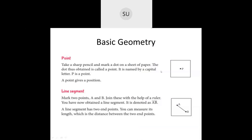Now let's see a few basics of geometry. First, what is a point? A point gives you a position. If you take a sharp pencil and mark a dot on a sheet of paper, that dot is called a point. It is named by a capital letter — here it is named as P. So P is a point, and a point gives you a position representing that location.